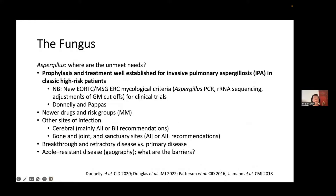My job is to focus on the fungus. Firstly, aspergillus — where are the unmet needs? Prophylaxis and treatment trials are well-established for invasive pulmonary aspergillosis in classic high-risk hematology patients. Do we need to repeat some of these trials, acknowledging the new EORTC-MSG-ERC mycological criteria, such as the aspergillus PCR, sequencing, and adjustments of GM cutoffs? This work was ably led by Donnelly and Pappas in reforming these mycological criteria.